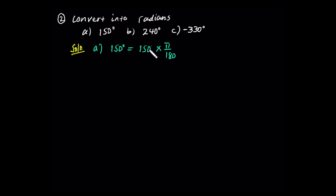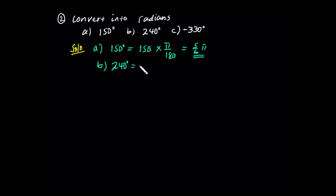What is the radian value? Let's see — simplifying 150 over 180, we cancel common factors to get 5 over 6 pi. So 150 degrees equals 5π/6 radians. For 240 degrees, similarly we simplify to get the result.